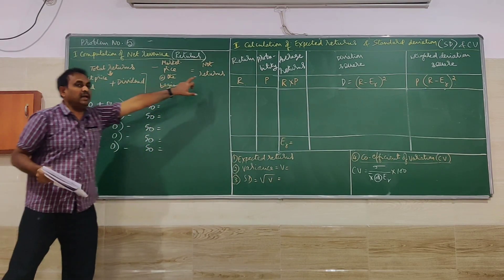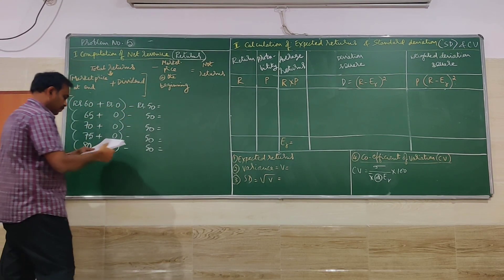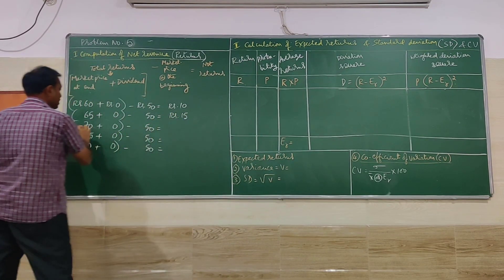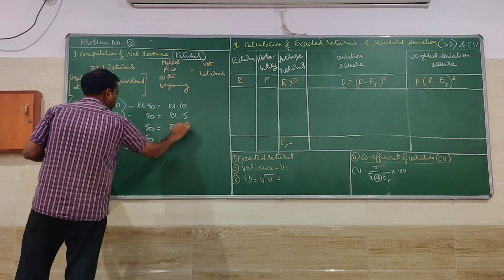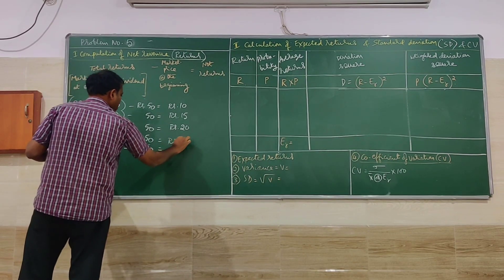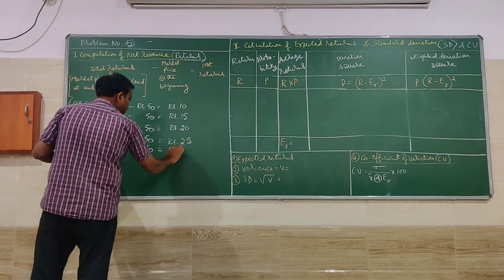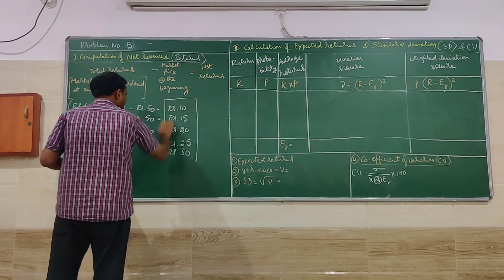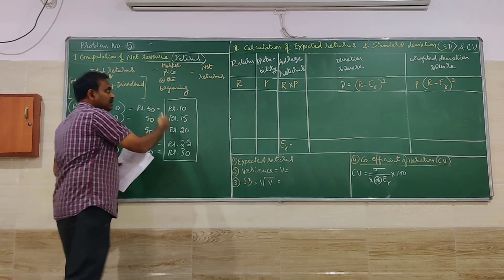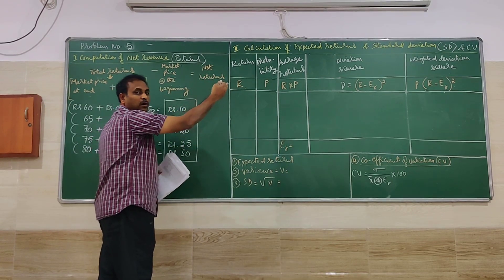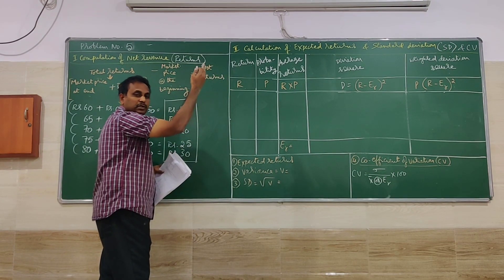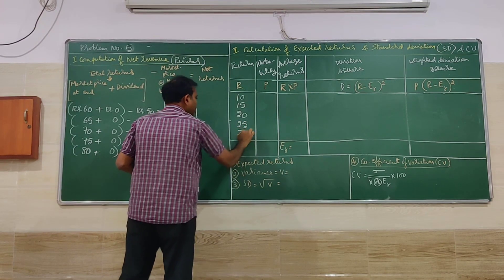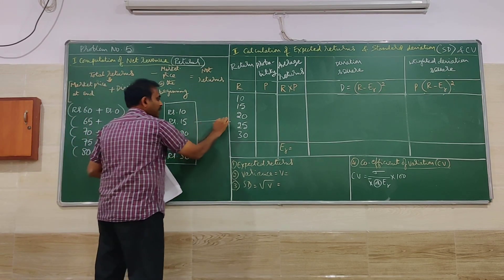So we can find the net returns: 60 minus 50, 65 minus 50, 70 minus 50, 75 minus 50, and 80 minus 50. These give us net returns of 10, 15, 20, 25, and 30. I have transferred these values to the green table for the calculation of expected return, standard deviation, and CV.